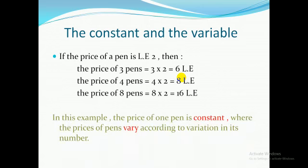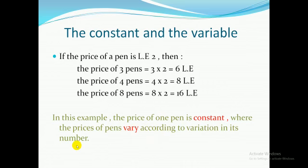In this example, the price of one pin is constant. What is the meaning of constant? Constant means it doesn't change. The price of one pin is two LE — it doesn't change. However, the prices of all pins vary, meaning they are different, according to the variation in the number of pins. As I change the number of pins, its cost changes.